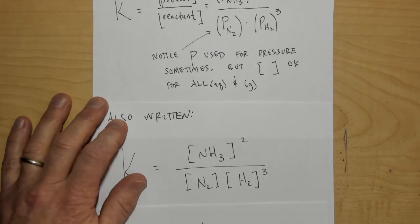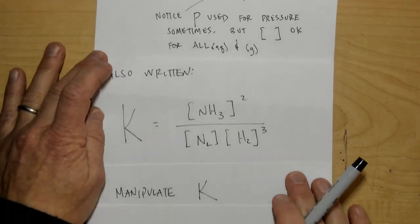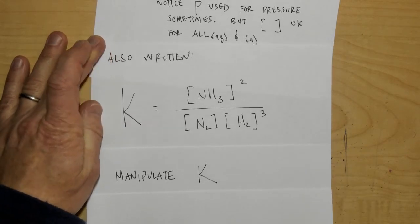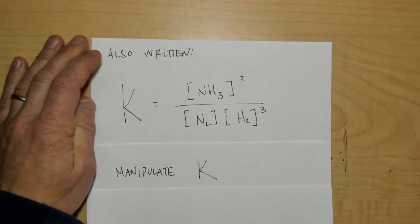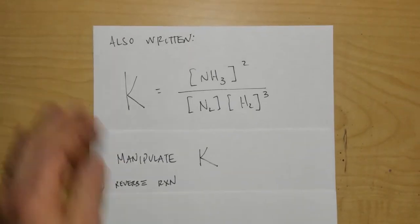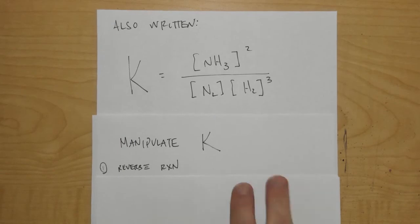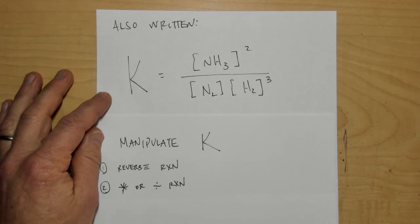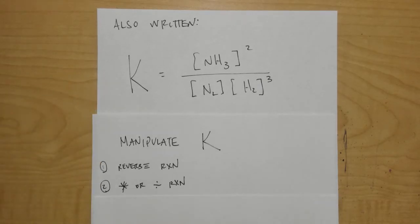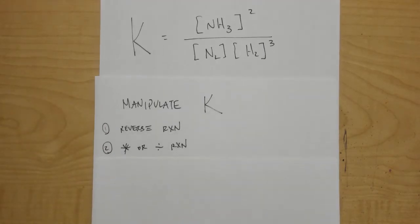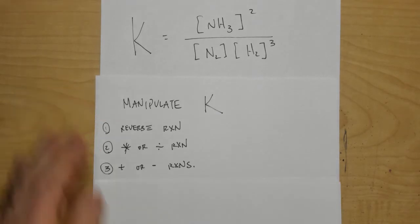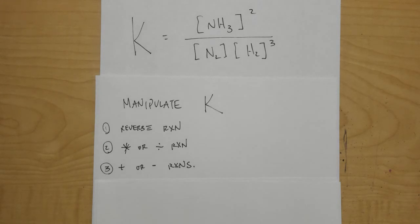Now we're going to talk about manipulating the equilibrium constant. We know how to write it, but how do we manipulate numerical values of K? There are three different ways: way one is if you reverse the reaction; way two is if you multiply or divide the reaction by a number; and way three is if you add or subtract reactions from one another.